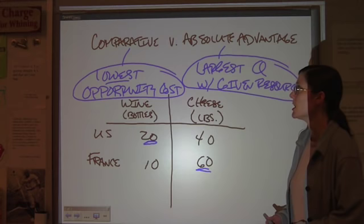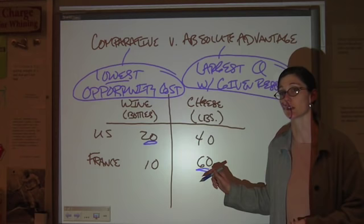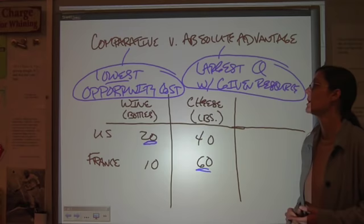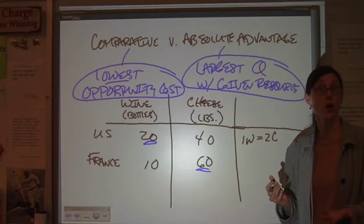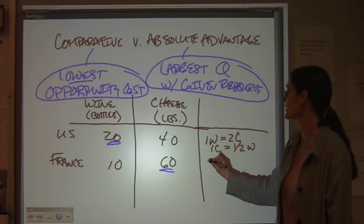Now, to figure out comparative advantage, this is where you have to look at the two products relative to each other and then compare that from the two countries. So, for example, if we're talking about the United States, what is the opportunity cost? First, one bottle of wine is equal to two pounds of cheese. One wine, two cheese. So, what is the opportunity cost of one unit of cheese? Well, all you have to do is divide. One cheese equals a half unit of wine. That's for the U.S. given the numbers that we have available to us.